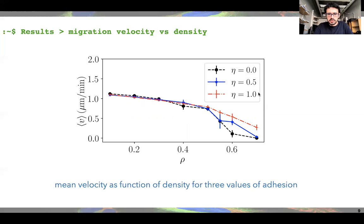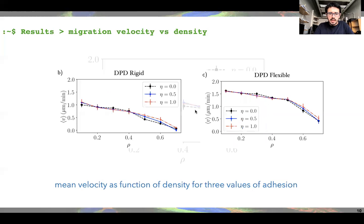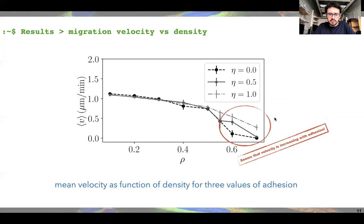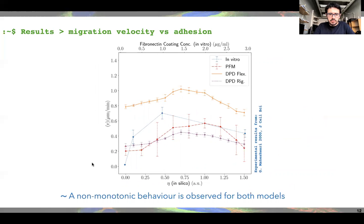We have three values for the adhesion coefficient eta. We observe the same results for dissipative particle dynamics with rigid and flexible fibers. Flexible fibers yield higher velocities, which is expected because the cell can push the fibers and get through more easily. Interestingly, for high density of fibers, velocity appears to increase with adhesion. To investigate this further, we fixed the fiber density at 0.6 and varied the adhesion coefficient eta. We observe that as eta increases, the velocity increases until it reaches a maximum, and then starts to decrease when eta is increased further.